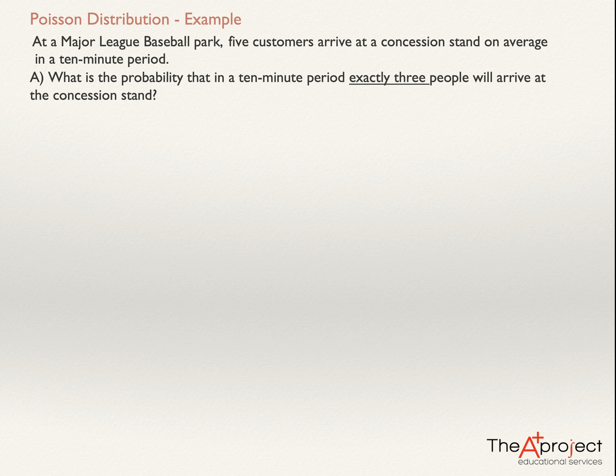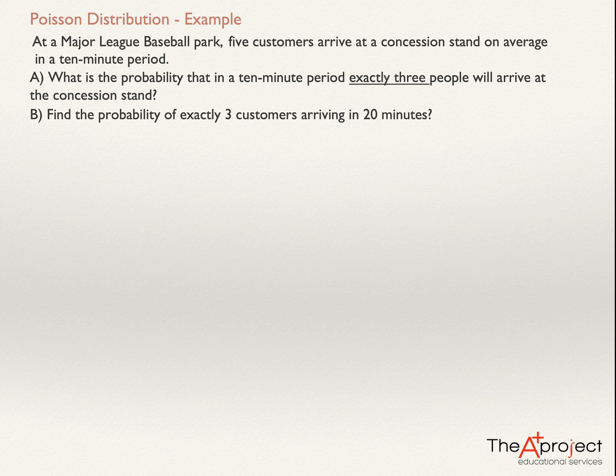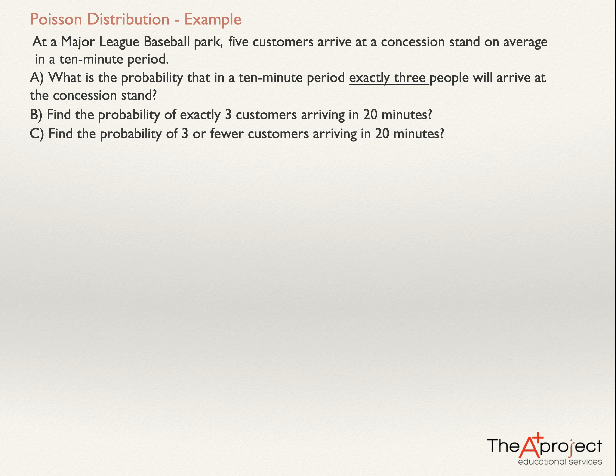First, what is the probability that in a 10-minute period, exactly three people will arrive at the concession stand? B: Find the probability of exactly three customers arriving in a 20-minute period. This is very similar to the previous question, but the first question is the probability in a 10-minute period, now in a 20-minute period. C: Find the probability of three or fewer customers arriving in 20 minutes.